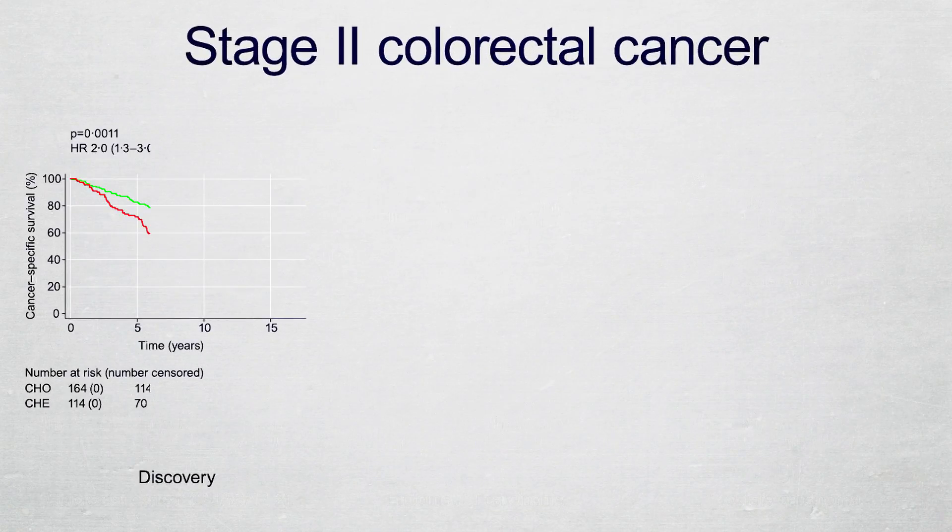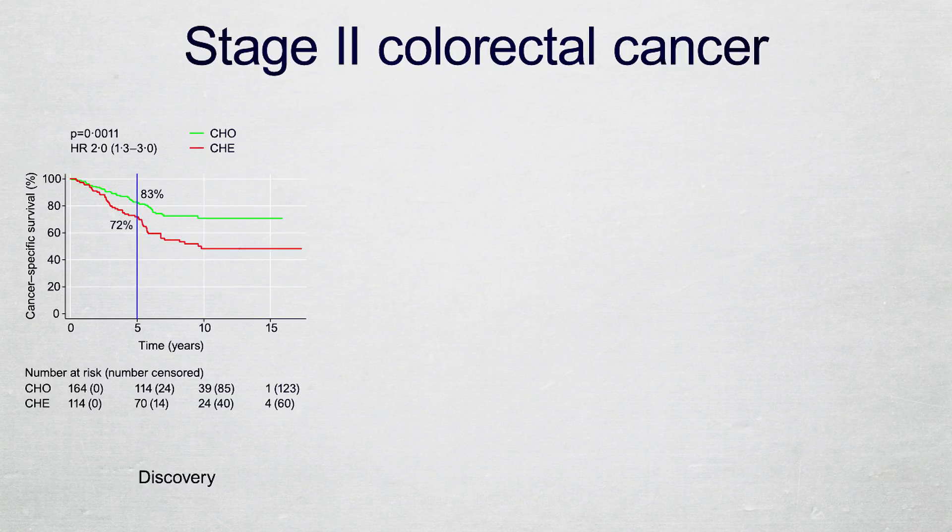The stage 2 colorectal cancer patients in the discovery cohort had a 5-year cancer specific survival of 83% if chromatin homogenous and 72% if chromatin heterogeneous.